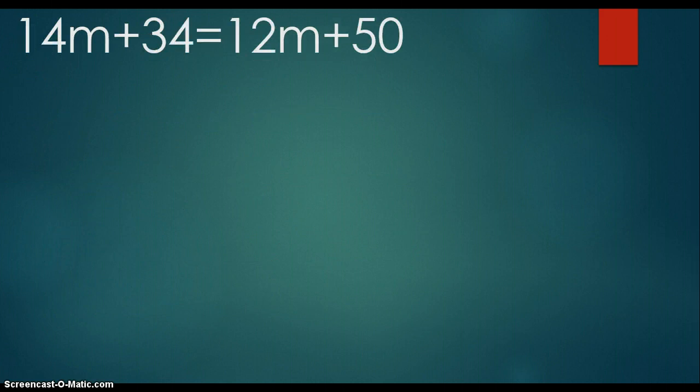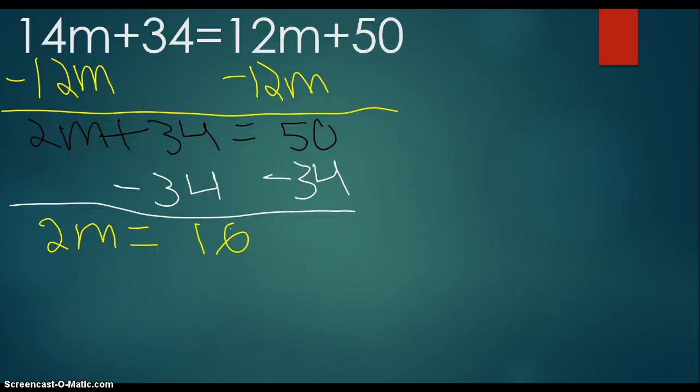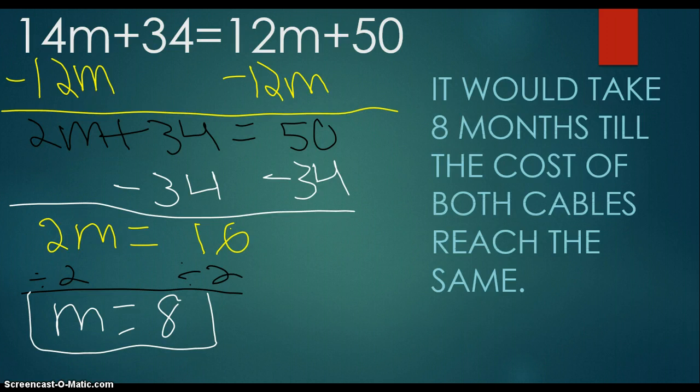My second question was 14m+34=12m+50. I would minus 12m on both sides and I would get 2m+34=50. After that I would minus 34 on both sides to get that 2m by itself and I would get 2m=16. But I still have that 2m together so I would need to divide by 2 on both sides and for my final answer I would get m=8. Now the question for this one was after how many months will the cable services cost the same? So it would take 8 months till the cost of both cables reach the same amount.